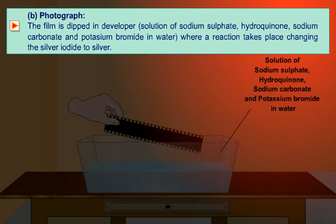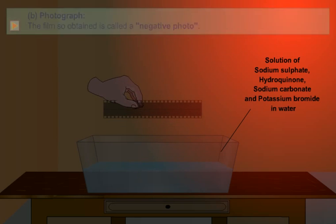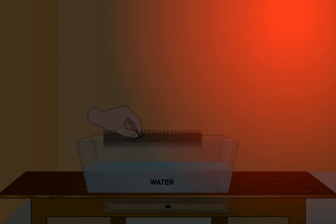The film is dipped in developer, solution of sodium sulphate, hydroquinone, sodium carbonate and potassium bromide in water, where a reaction takes place changing the silver iodide to silver. The film so obtained is called a negative photo. The negative is washed by water.